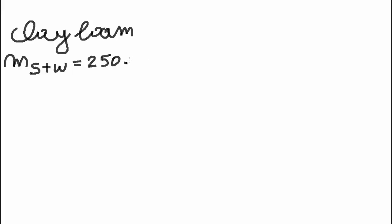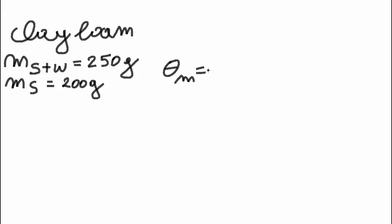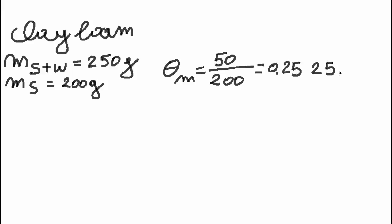Let us run an example for a clay loam soil. We go to the field, take a soil sample, and the mass of the solids and the water is equal to 250 grams. We bring it to the lab, dry it, and weigh it again. The mass — now only the mass of solids — is reduced to 200 grams. Consequently, the mass water content is equal to the mass of water (250 minus 200 grams) divided by 200 grams dry mass. This gives 0.25 kilograms of water per kilogram dry soil, or 25 mass percent.